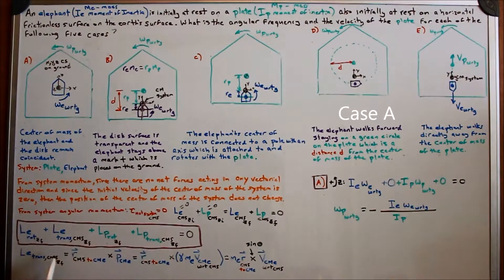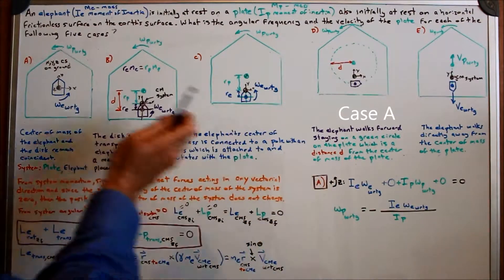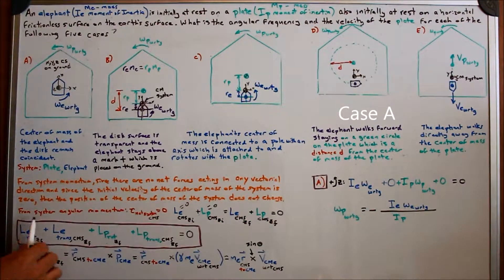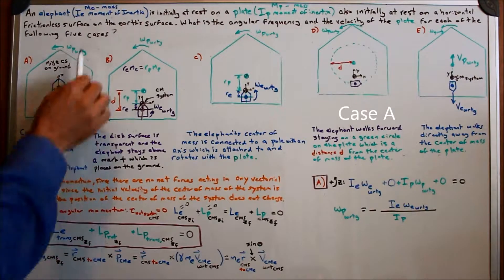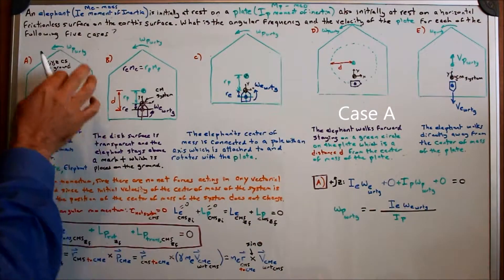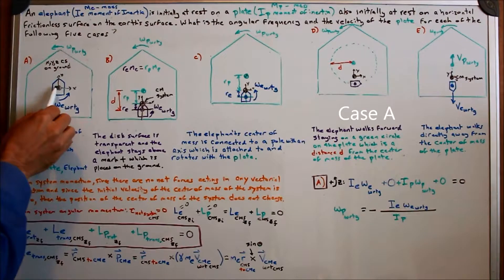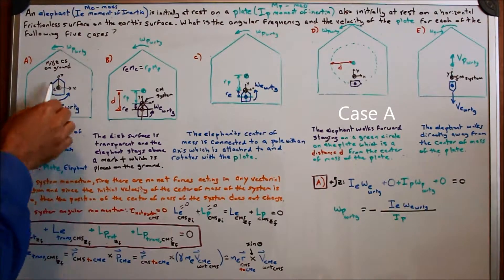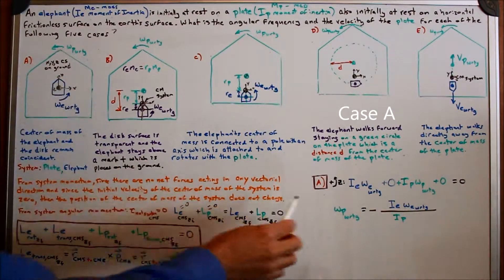Solving for Case A, we use the angular momentum equation. The rotational angular momentum of the elephant about its own center of mass is I sub e times the angular frequency of the elephant with respect to ground. The translational term is zero for multiple reasons: the velocity of the elephant's center of mass relative to the center of mass of the system is zero, and the distance vector from the center of mass of the system to the center of mass of the elephant is also zero.